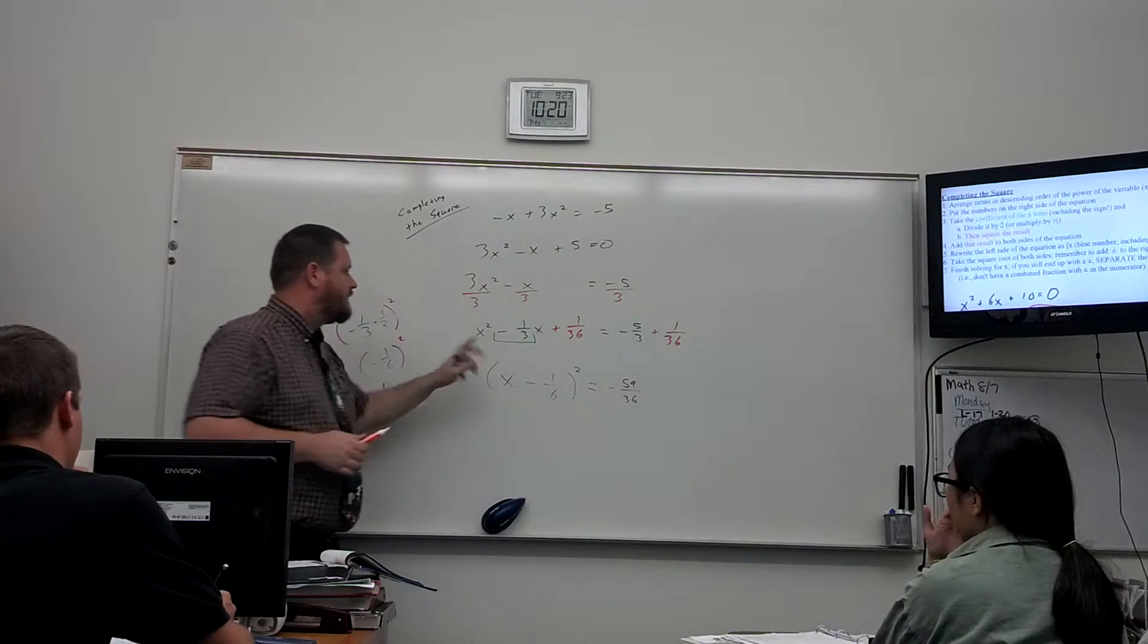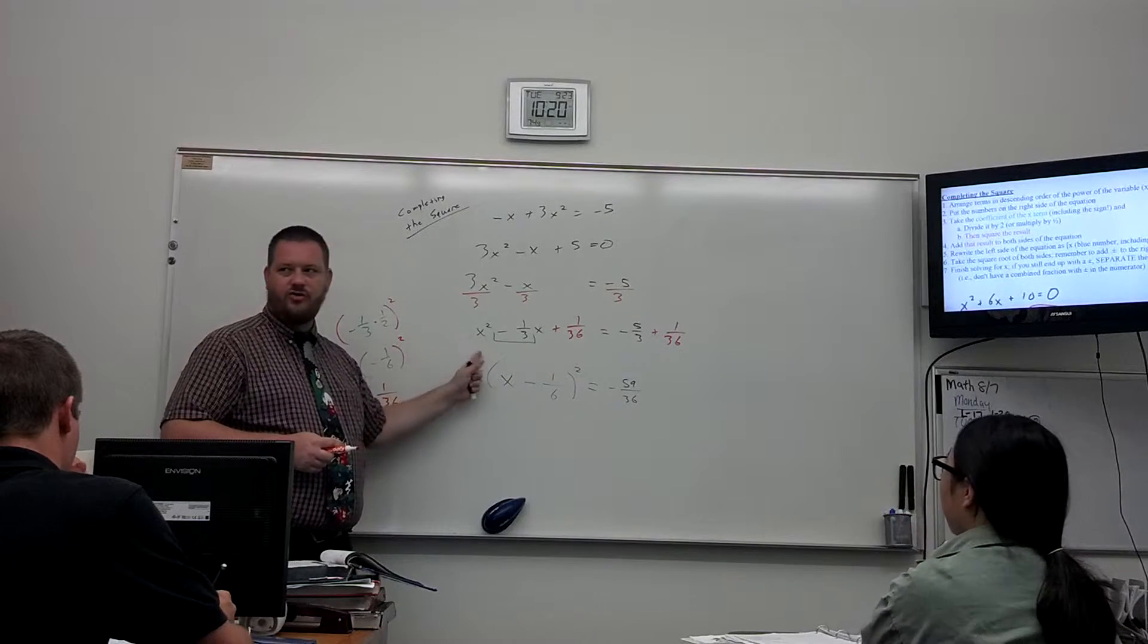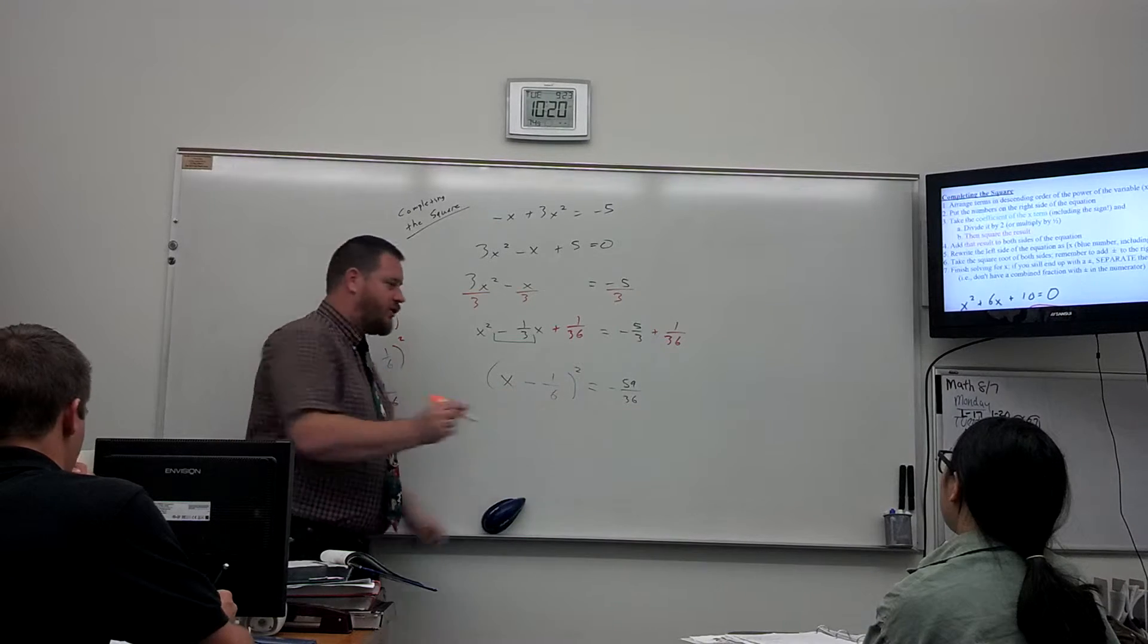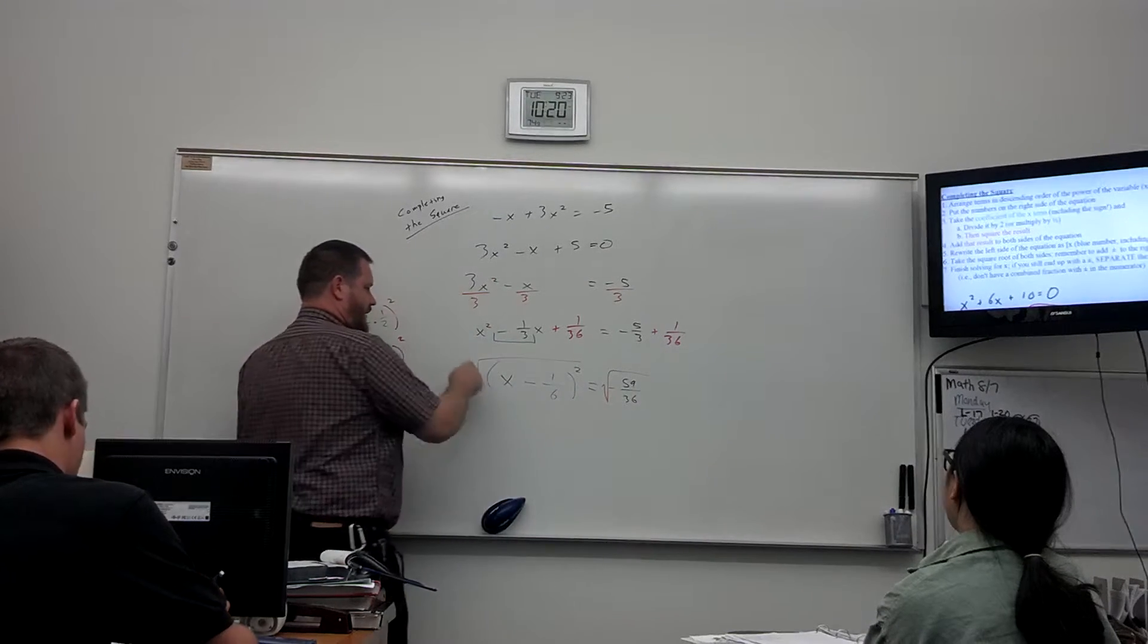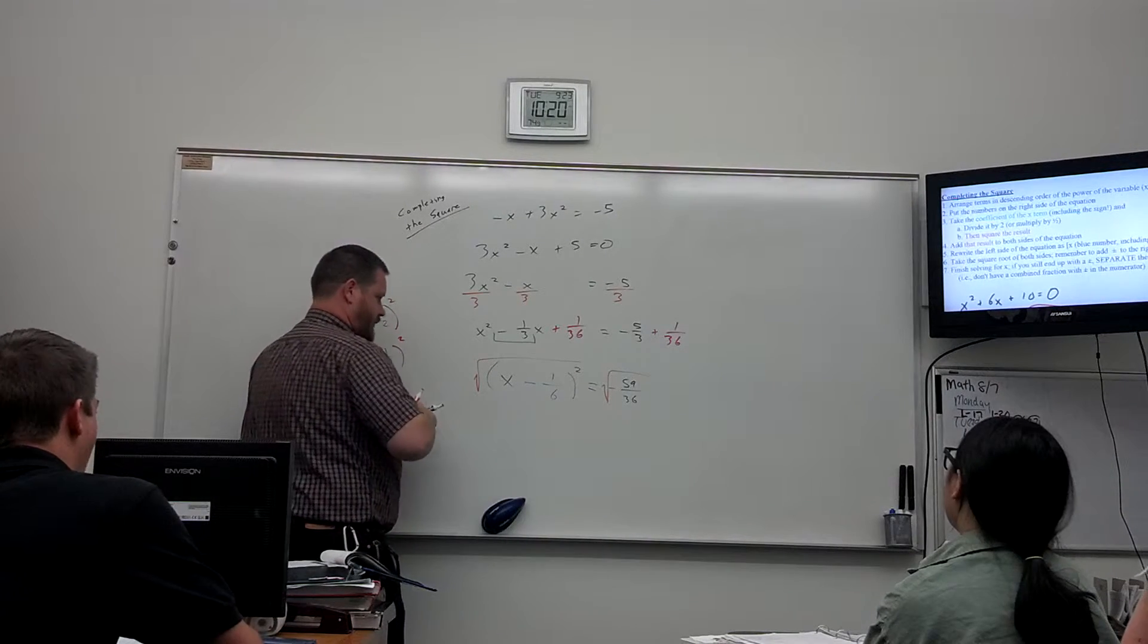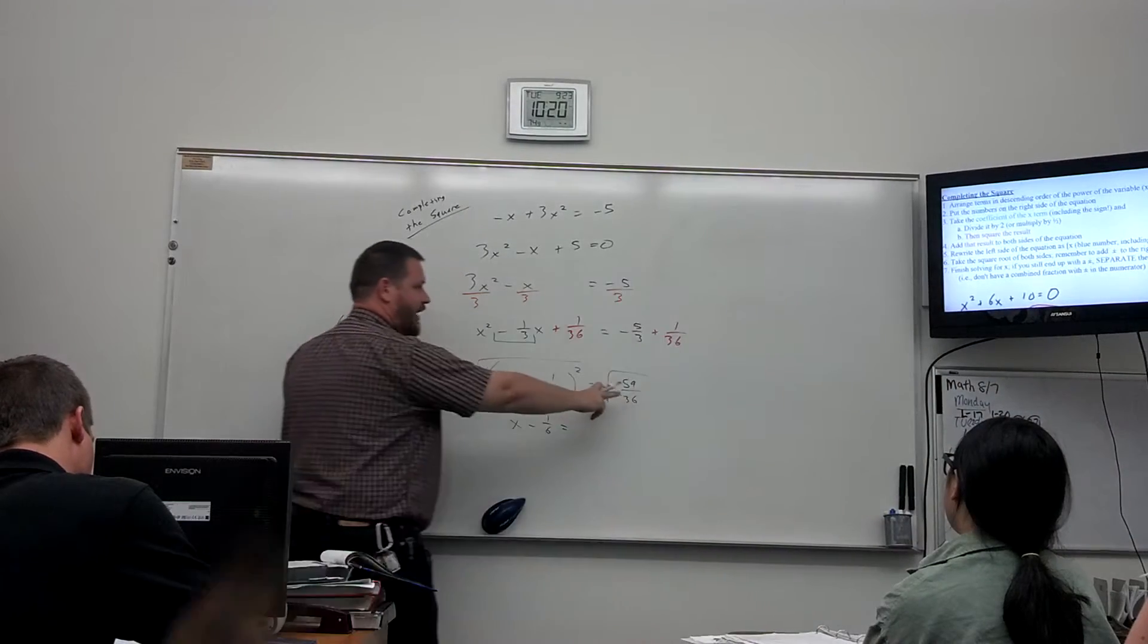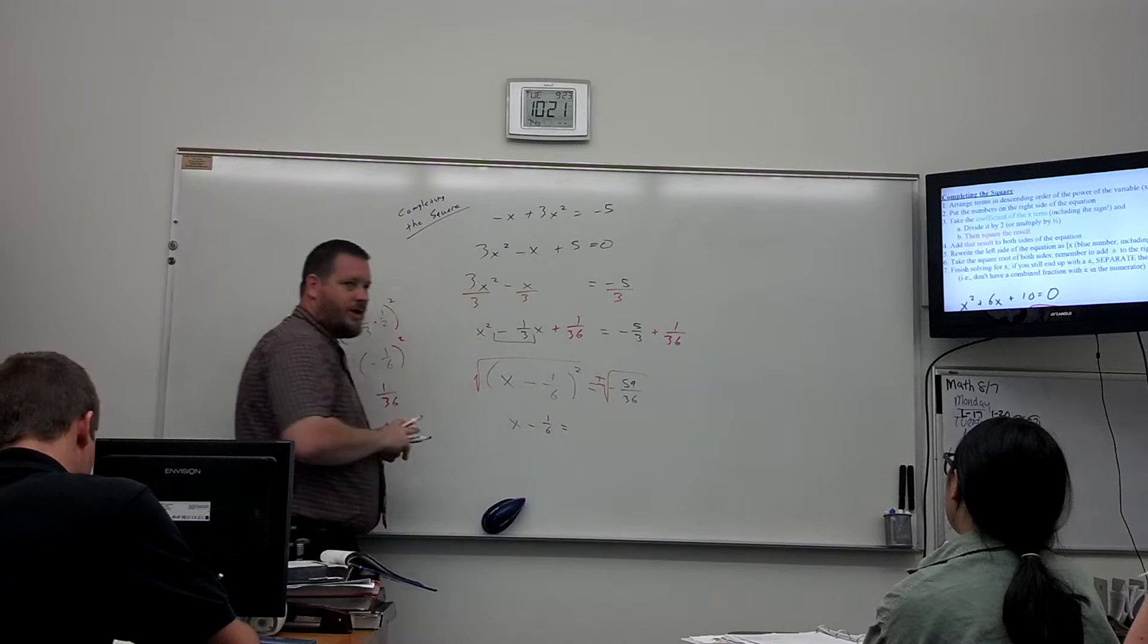The whole point of doing this is so that we can have something that has an x squared term and write it as something that includes an x squared so that we can take the square root. And the square root cancels out this squared. But I have just an x minus one sixth equals, any time you take the square root of both sides of the equation, remember, always do plus or minus on the right.